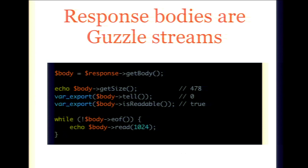Response bodies can be echoed because they implement __toString, but they're actually classes you can interact with. You can get the body from a response object and echo it, but be careful — that loads it completely into memory. You can also use tell, from Linux ftell, which tells you your position in the stream. A stream has bytes in it; as you read, you increment your position, and tell reports that. The stream exposes its capabilities — whether it's readable, writable, or seekable. You can loop over a stream and read bytes as needed rather than loading everything into memory using the EOF and read functions. Streams protect you by default: once data exceeds 2 megabytes, it switches to a temporary file on disk.